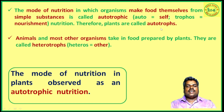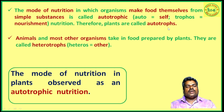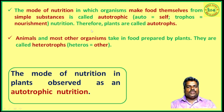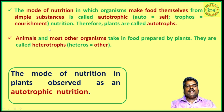Plants prepare their own food materials, so they are called autotrophs. Autotrophs use simple substances like water, carbon dioxide, and minerals to prepare their food. Autotrophic nutrition is the mode seen in plants.